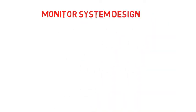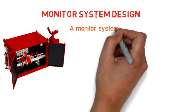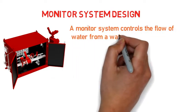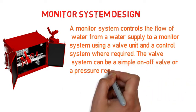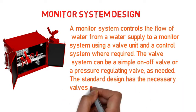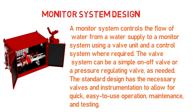Now you can see the system design of the monitor. A monitor system controls the flow of water from a water supply to a monitor using a valve unit and a control system where required. The valve system can be a simple on/off valve or a pressure-regulating valve as needed. The standard design has the necessary valves and instrumentation to allow for quick, easy-to-use operation, maintenance, and testing.